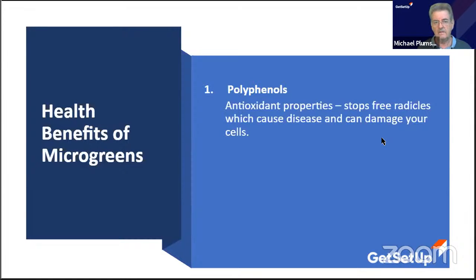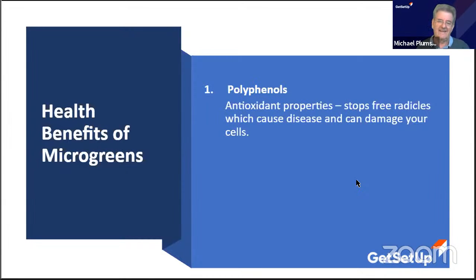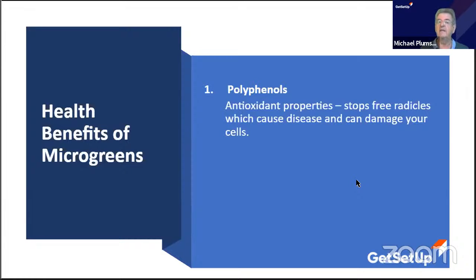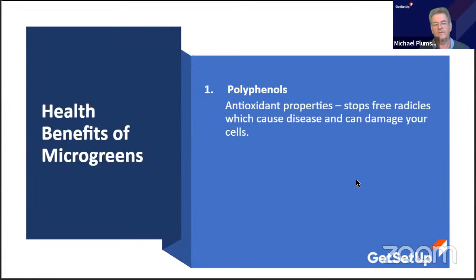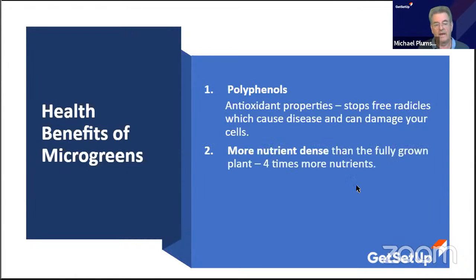Polyphenols are also antioxidants, and you need those more as you age because of damaging free radicals in your system that can cause major illnesses. Your immune system needs a good microbiome, and you need to feed the microbiome with something that has antioxidant properties — that's microgreens.